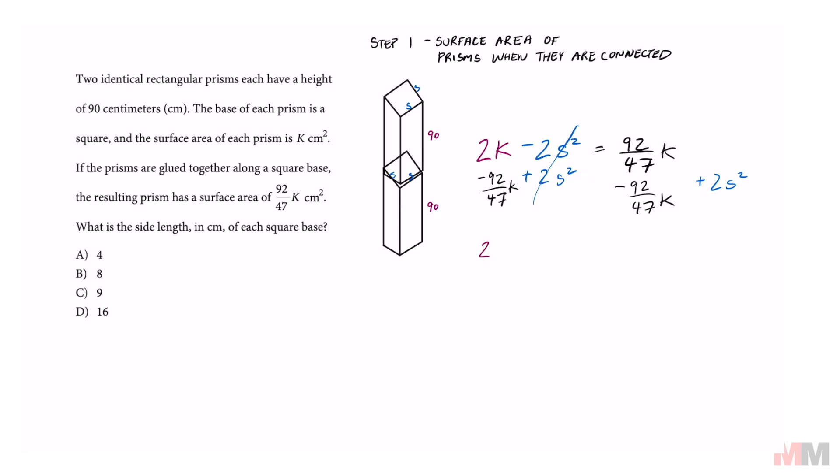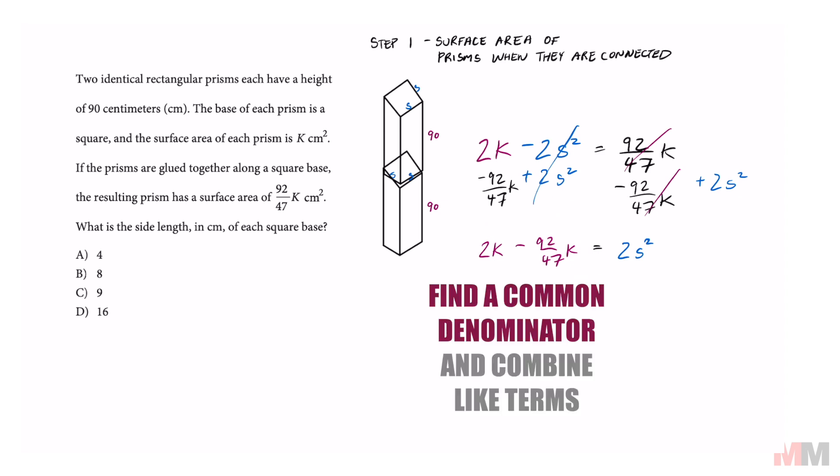And now we're left with 2K minus 92 over 47 K. These cancel out right here equals 2S squared. These terms in purple, we can combine like terms. And if you don't have a calculator, you can just multiply this part right here by 47 over 47 to get like denominators.